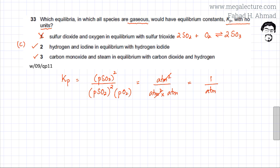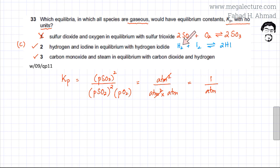The second statement involves hydrogen and iodine in equilibrium with hydrogen iodide. The equation is H₂ + I₂ ⇌ 2HI. Writing the Kp expression: it's the partial pressure of the product HI squared divided by the partial pressures of the reactants H₂ and I₂.